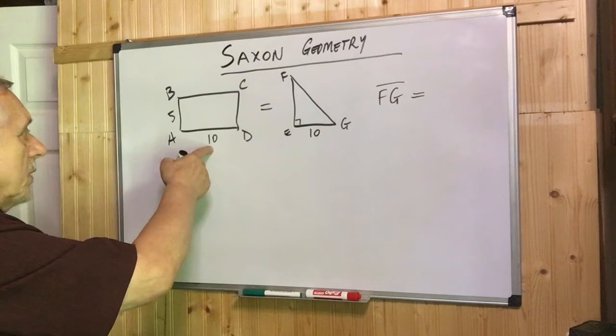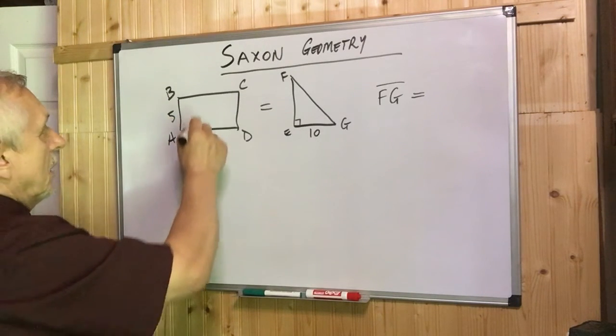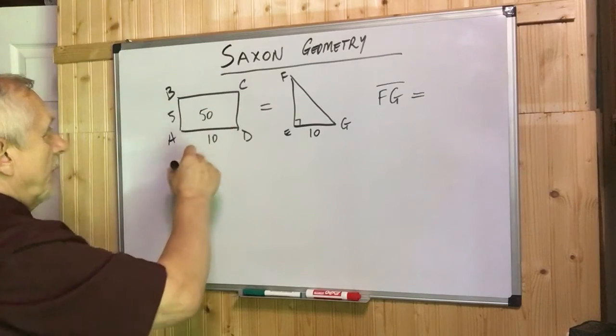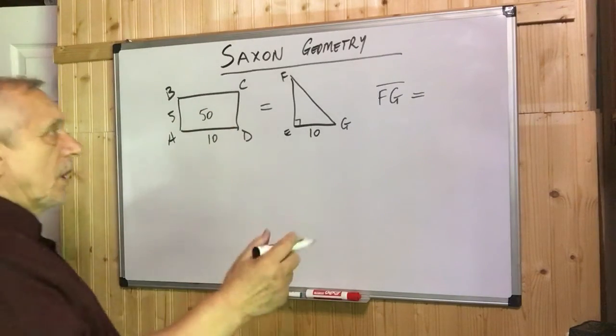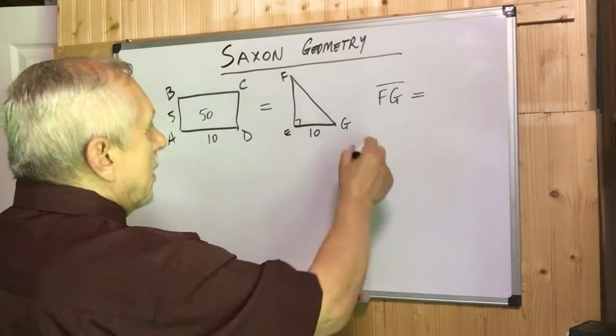We already know that this is 10, this is 5, so that means the area of this rectangle is 10 times 5, which is 50. Okay, I forgot to mention, the question is how long is this segment FG?